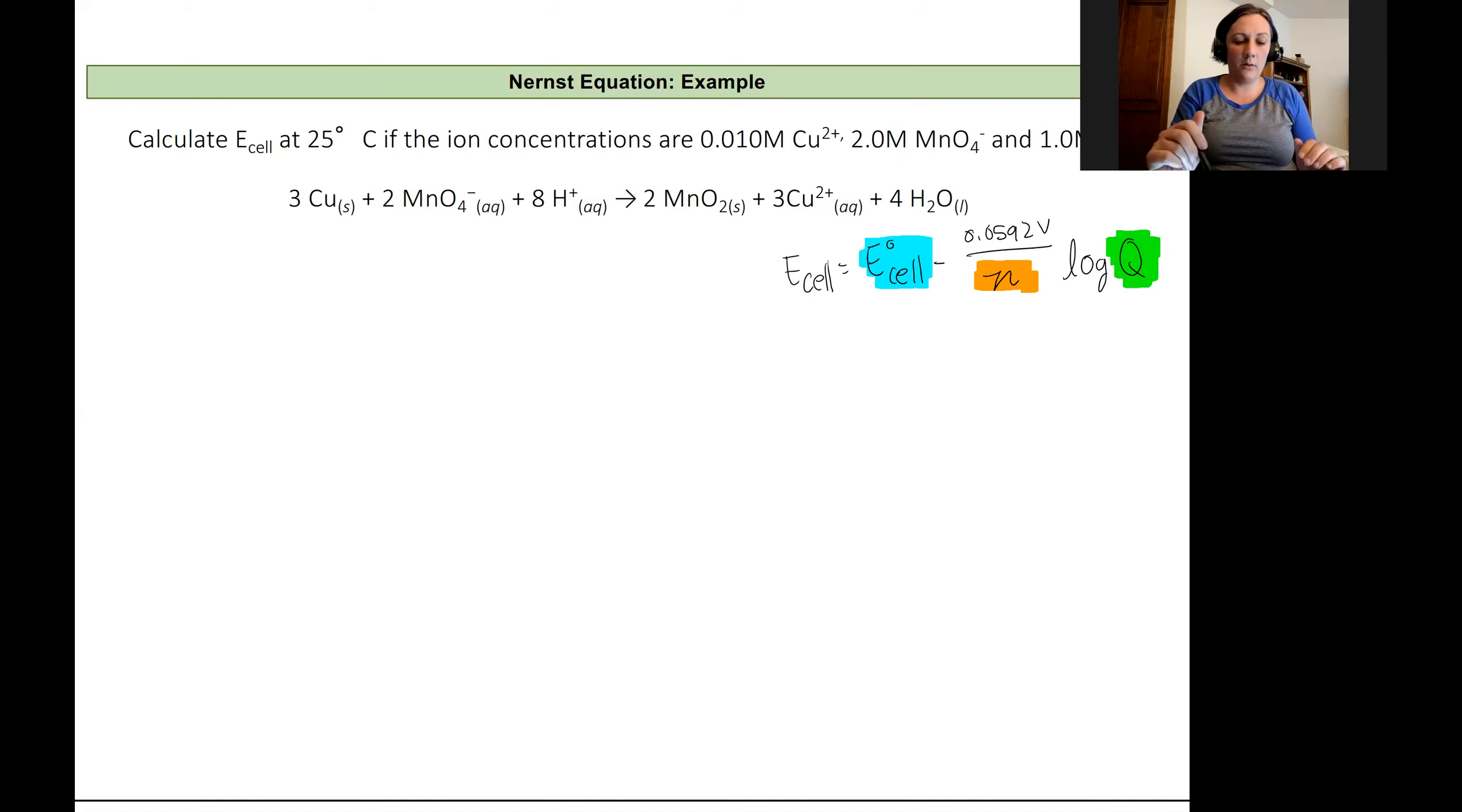Looking at our reaction, let's focus on determining the cell potential first. I have copper becoming copper plus two, so we are losing electrons. It's being oxidized. And our manganese oxide is becoming manganese plus two. That is being reduced. It's gaining electrons. Our hydrogens still have a plus one oxidation state.